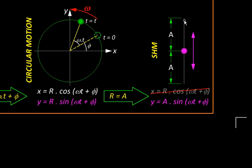And then our expression becomes y = A sin(ωt + φ), which is the equation of motion of a simple harmonic motion. So this conclusively proves that projection of a uniform circular motion is a simple harmonic motion.